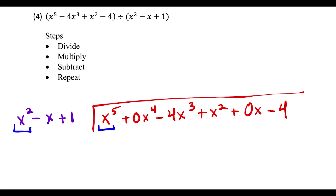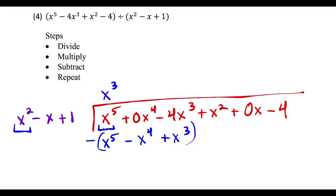Dividing the leading terms gives x to the third. Multiplying: x to the fifth, then minus x to the fourth, then plus x to the third. Subtracting this polynomial using keep, change, change — these terms cancel. We have 0x to the fourth plus 1x to the fourth making x to the fourth, and negative 4x to the third plus minus x to the third making minus 5x to the third. Drag down the x squared term.